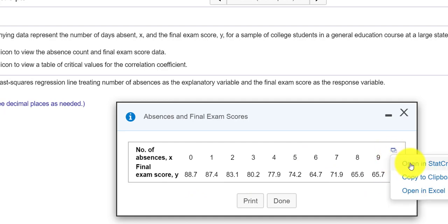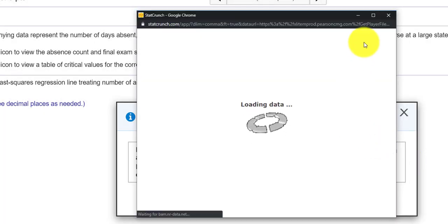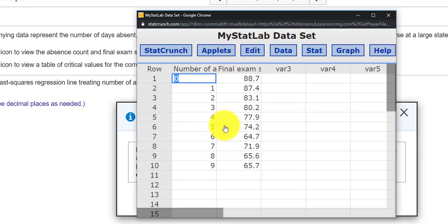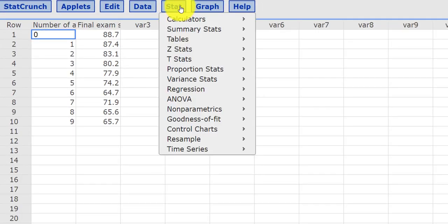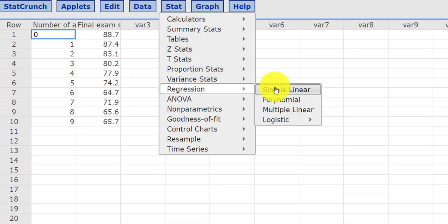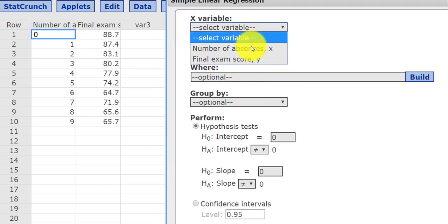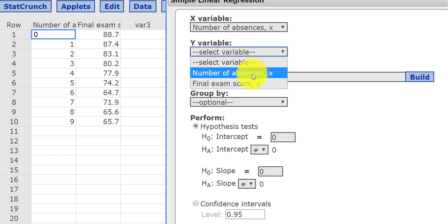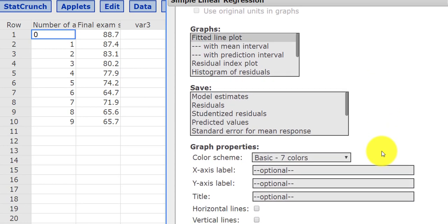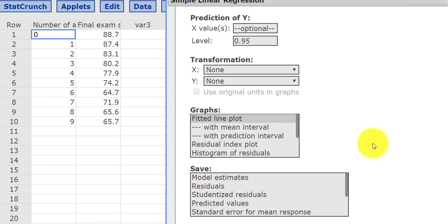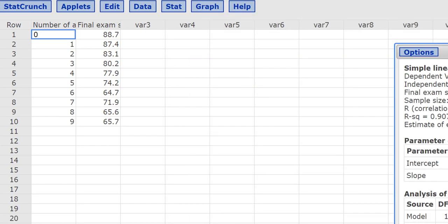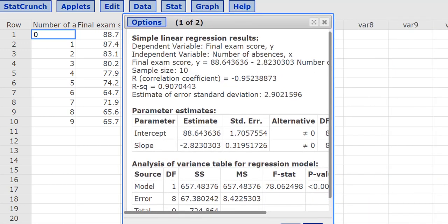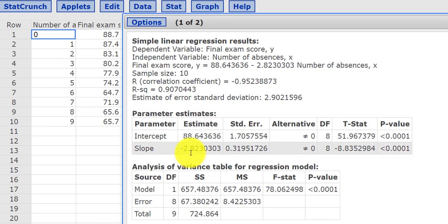I open this up in StatCrunch and we wait for it to load. Here's my data. So let's do stat, regression, simple linear. My x were the number of absences. Y was the final exam score. And I think that's all I need for now. I press compute. And here we go. So my regression equation looks like my slope is this negative 2.823.